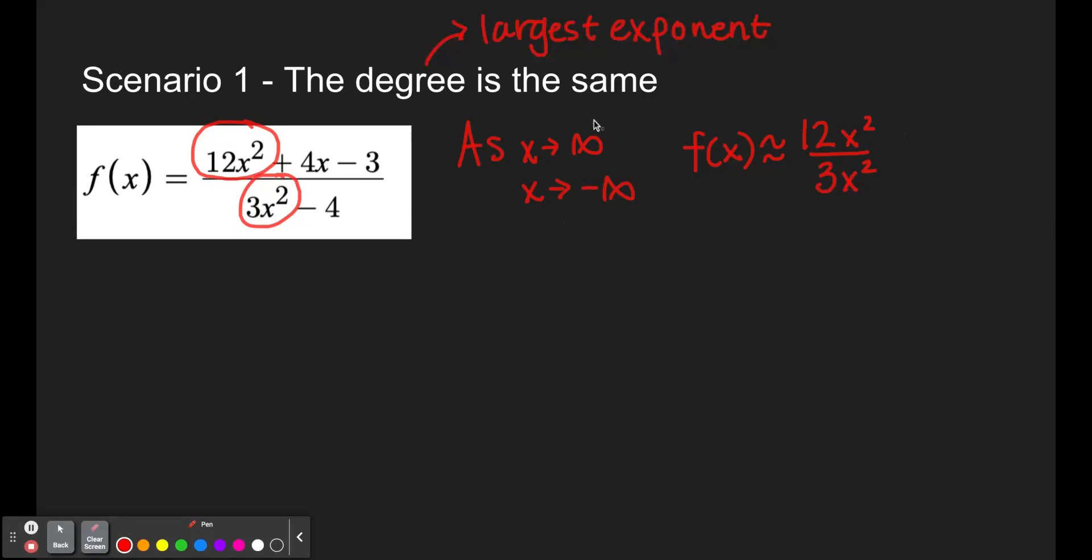Again, we have to say this caveat that this is only a true situation as x approaches infinity and x approaches negative infinity. If we were looking at things that are more zoomed in, if we were looking at intercepts and vertical asymptotes, we would not be able to just knock out the rest of these terms.